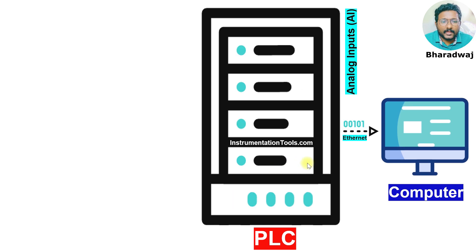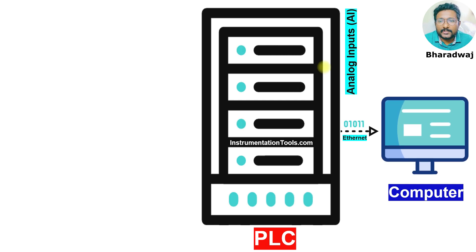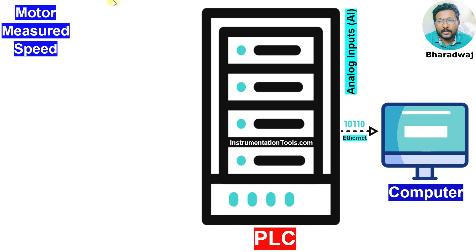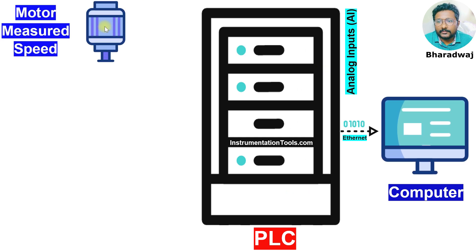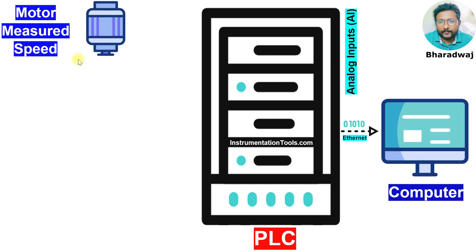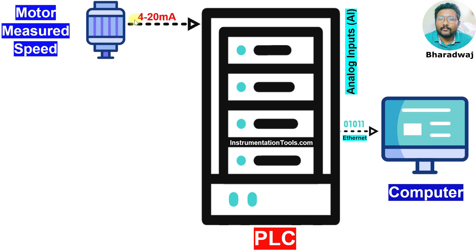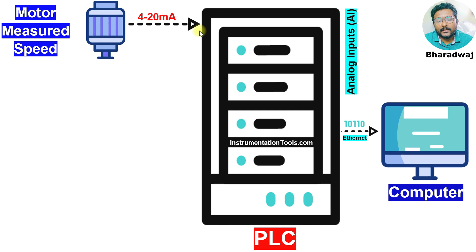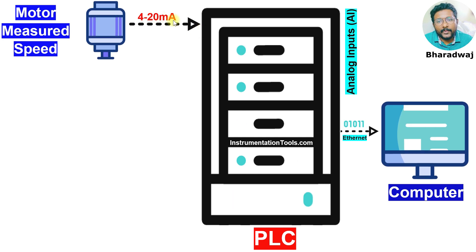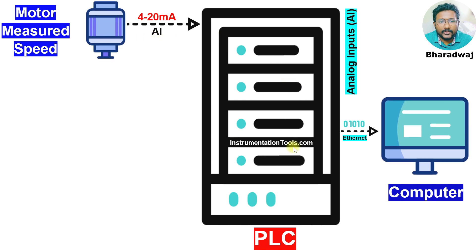We have a PLC and one computer. We will see some examples of analog inputs. For example, there is a motor and you want to measure the motor speed. This motor speed is also an analog input to the PLC.